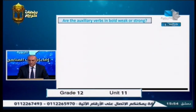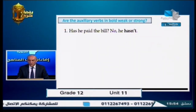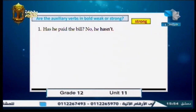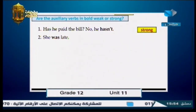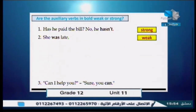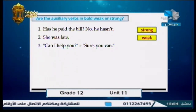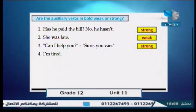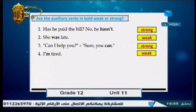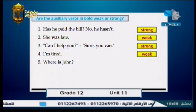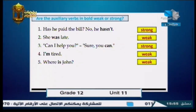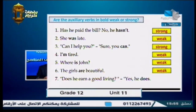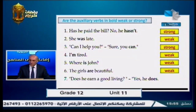Exercise — are the auxiliary verbs in bold weak or strong? 1: 'Has he heard the bell? No, he hasn't' — strong, because it's at the end as an answer. 2: 'She was late' — weak, because 'was' is in the middle. 3: 'Can I help you? Sure, you can' — strong. 4: 'I'm tired' — weak, in the middle. 5: 'Where's John?' — weak, in a question in the middle. 6: 'The girls are beautiful' — weak. 7: 'Does he earn a good living? Yes, he does' — strong.